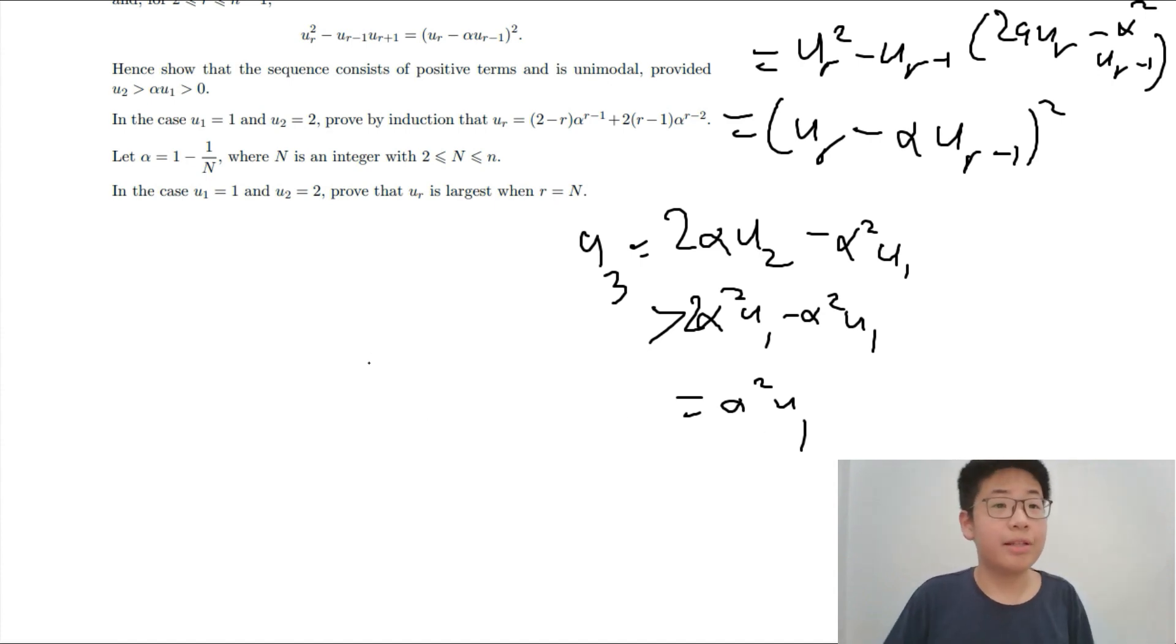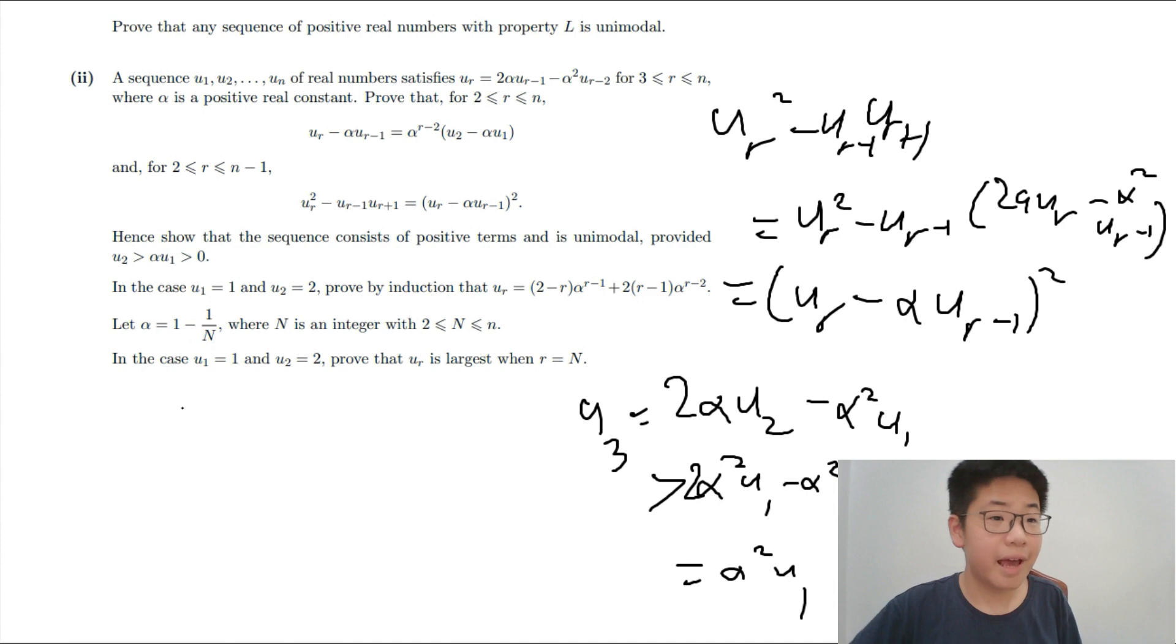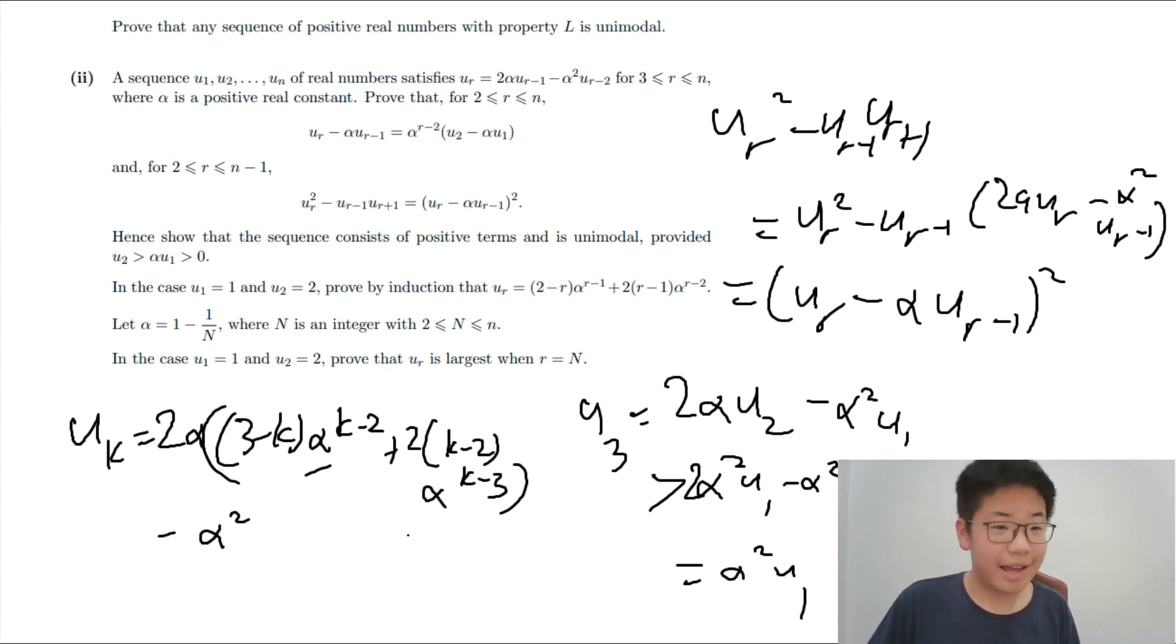In the case U1 equals to 1 and U2 equals to 2, UR is this. Now, we have UR equals to 2 alpha 3 minus K, alpha to the K minus 2, plus 2 K minus 2, alpha to the K minus 3, minus alpha to the K minus 4.